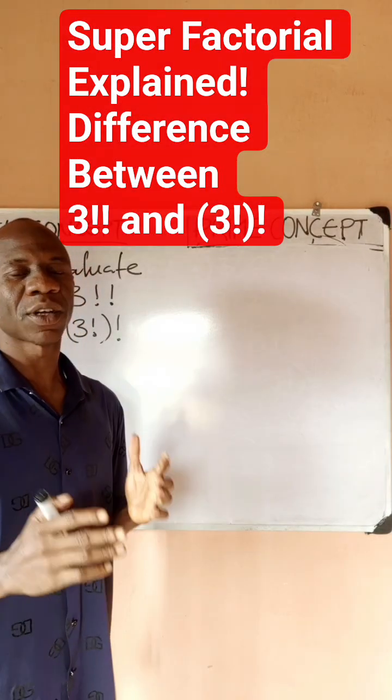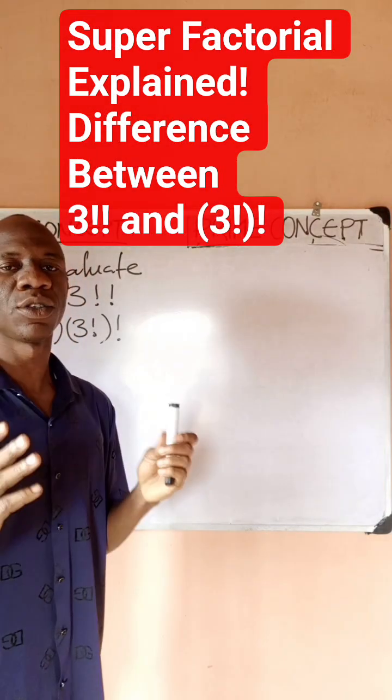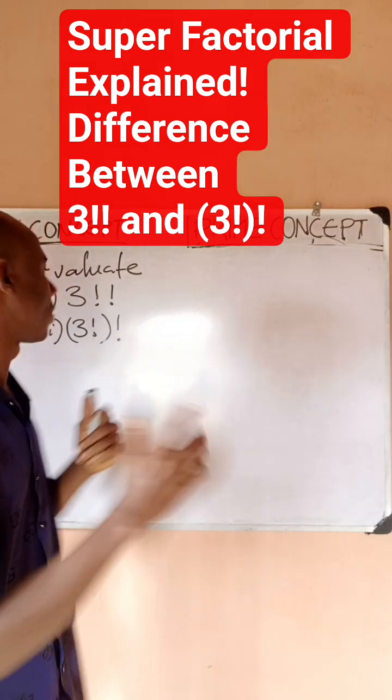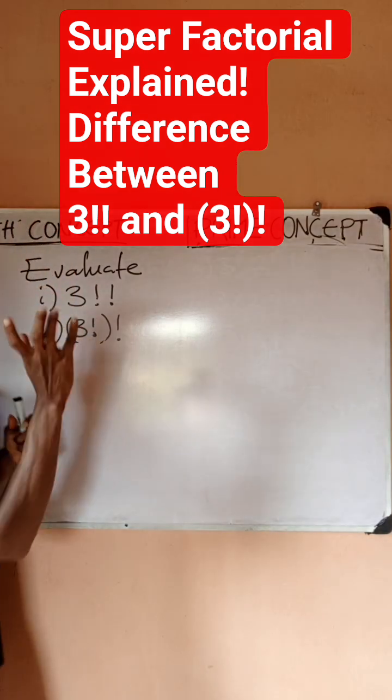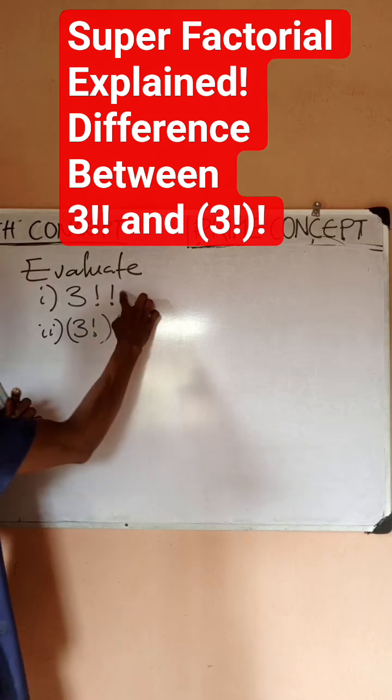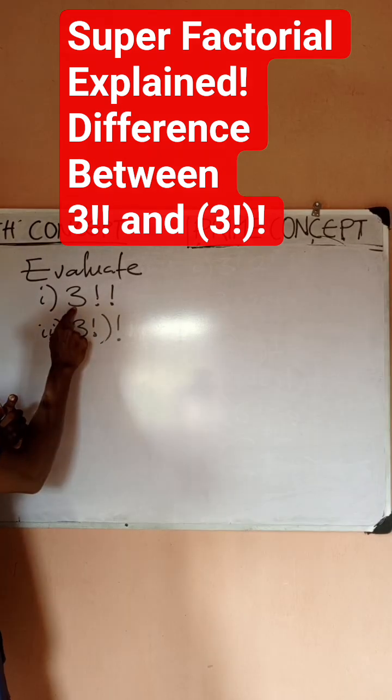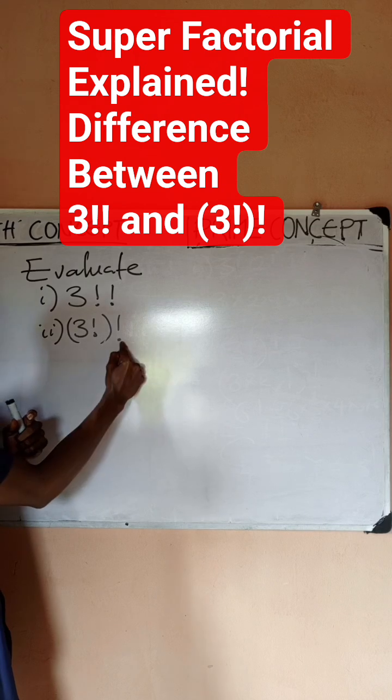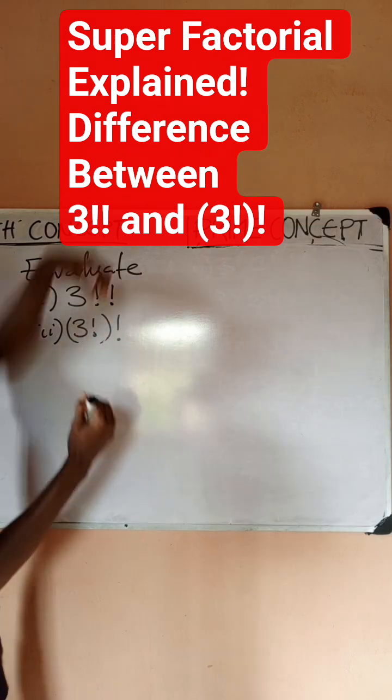Hello guys, this is Prime Concept. We want to look at a factorial problem, how to solve what we know as super factorial. So looking at this, of course the first thing you should notice is that both of them are not the same. So this is 3!! but this is (3!)!.